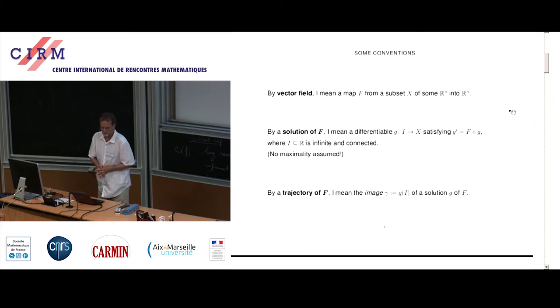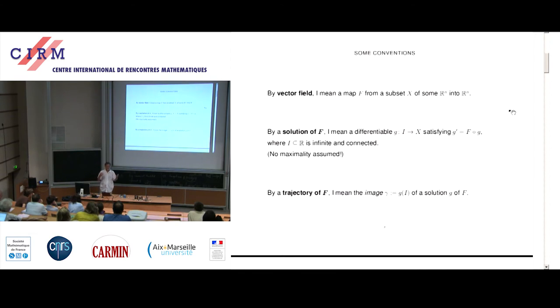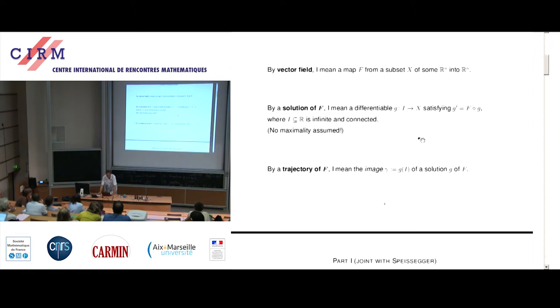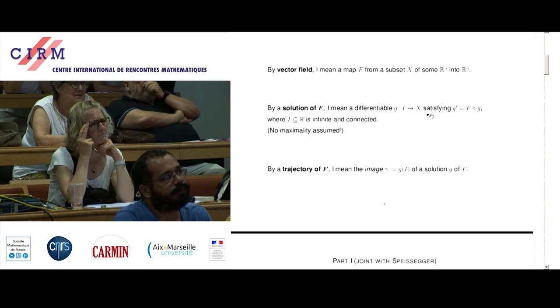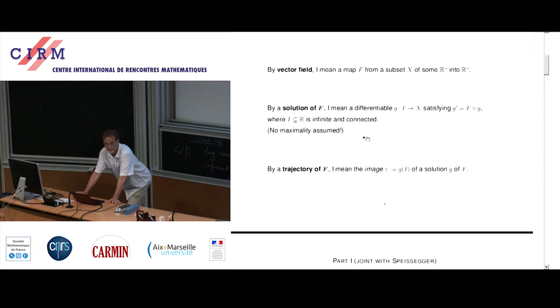So first, I want to make a few conventions here to make sure we're all on the same page. By vector field, I simply mean a map f from some subset of some R^n into R^n. Of course, normally, we want them to be at least locally Lipschitz. By a solution of f, I mean any differentiable path from any kind of non-trivial interval that satisfies the normal differential equation here. In particular, I do not want to assume any maximality. And then finally, by a trajectory of f, I will mean the image of a solution. Not with arrows, if you will. It's not the solution, it's the image of the solution.